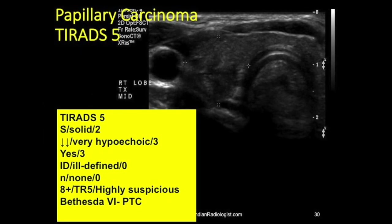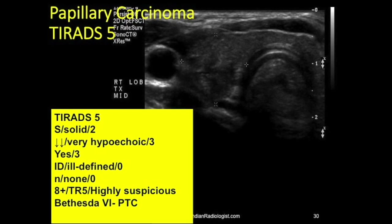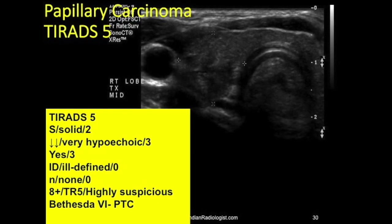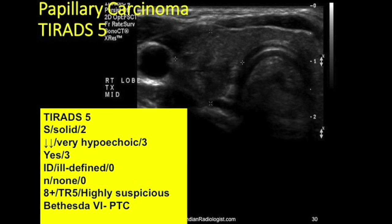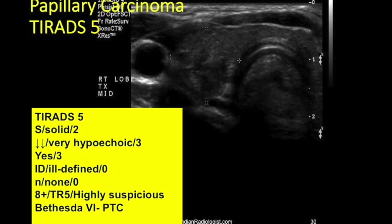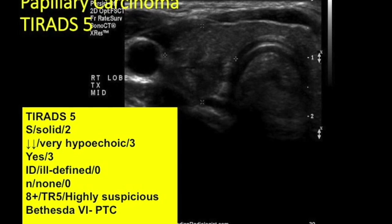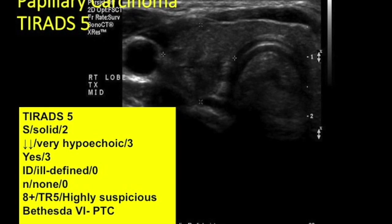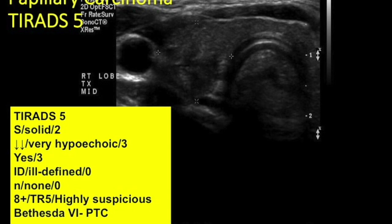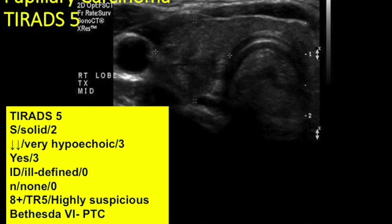Next case: TI-RADS 5. Solid — two points. Very hypoechoic — three points. Taller than wide — yes, three points. Margins are ill-defined. No calcifications. Total score of eight — TR5, highly suspicious. Bethesda 6 confirmed; result was PTC.